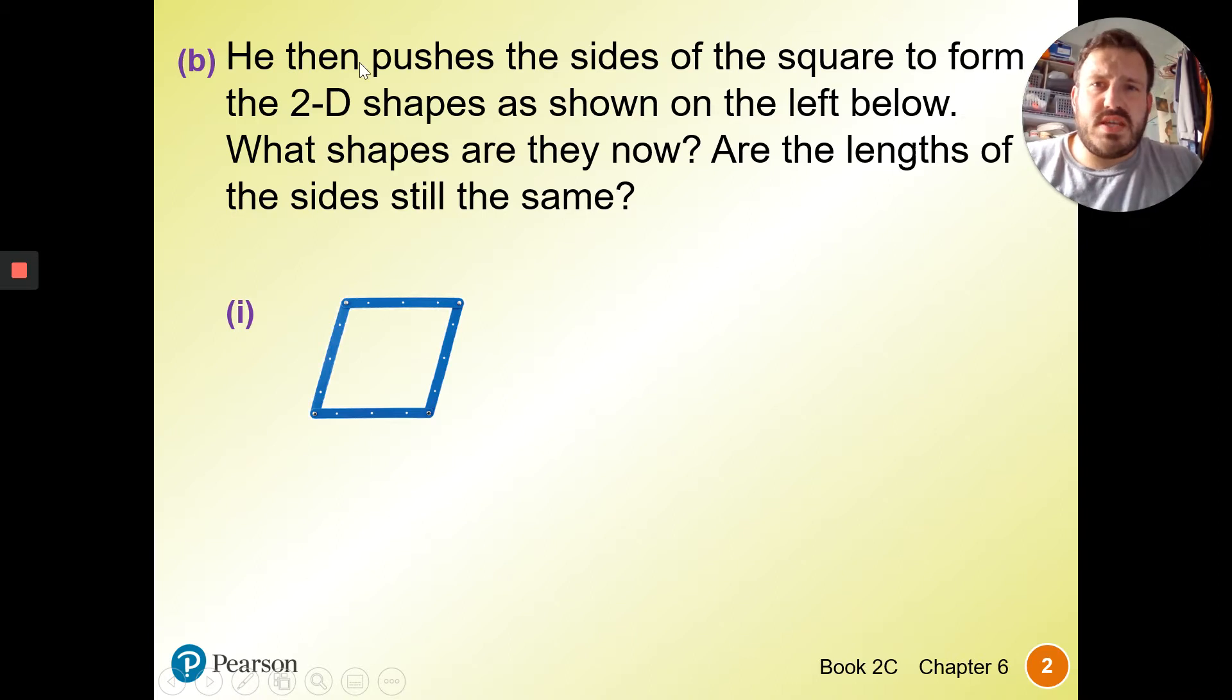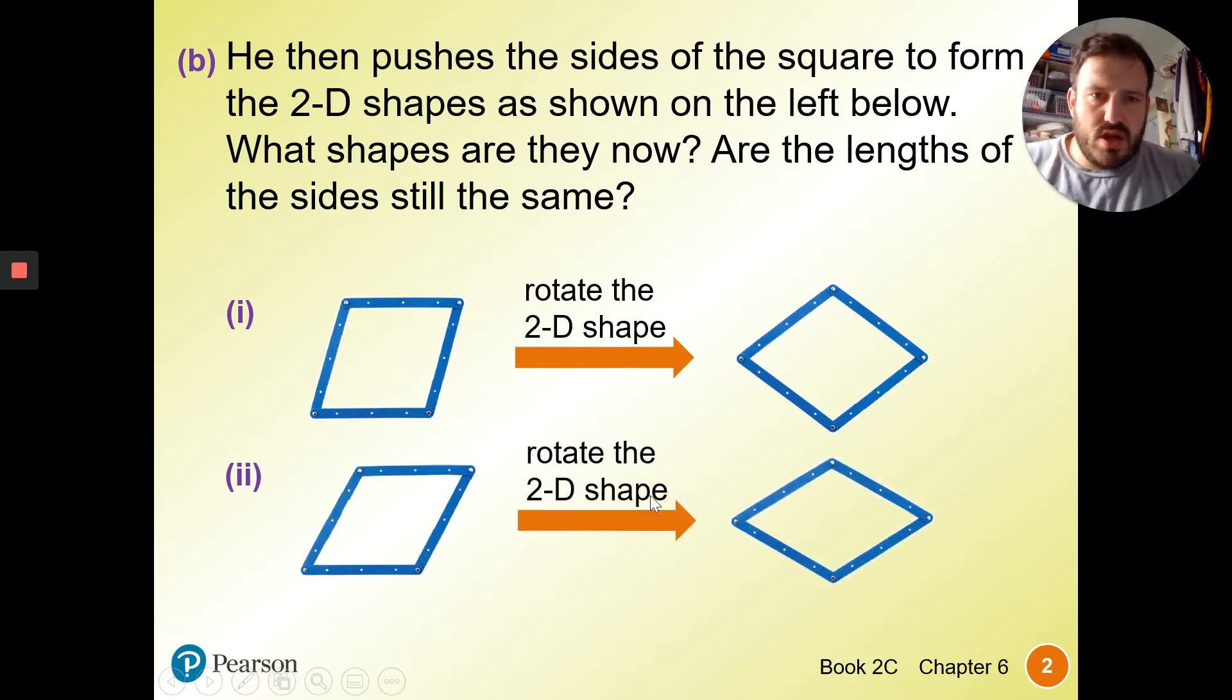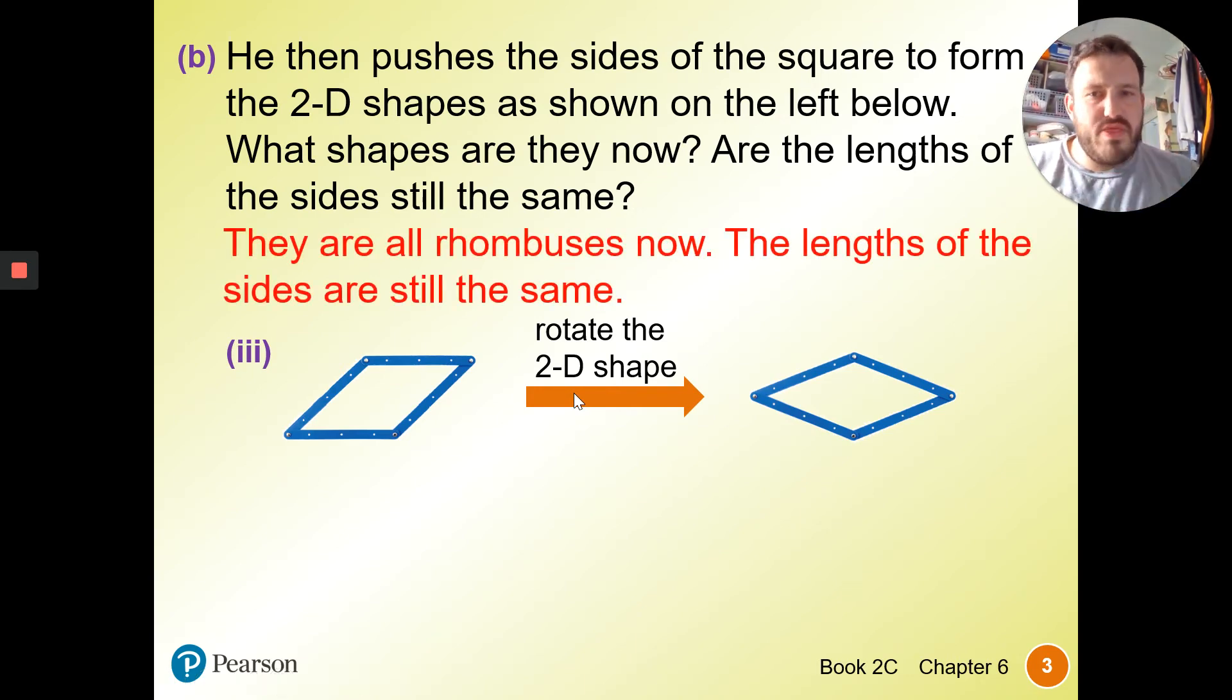But what he then does, he pushes the side of the square to form the 2D shape shown below. So what is this shape now? And are the lengths still the same size? Well, we can rotate this 2D shape. It's still the same length, isn't it? We can still move it around. So this is what we call a rhombus. The lengths of the sides are still the same.